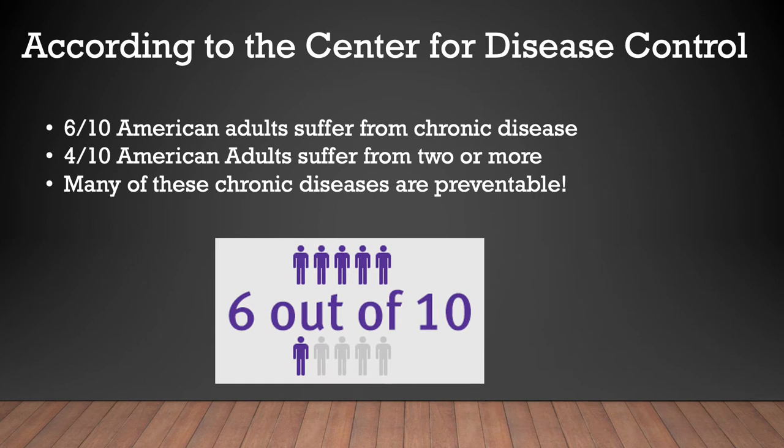According to the Centers for Disease Control, 6 out of 10 American adults suffer from chronic disease, and 4 out of 10 suffer from 2 or more chronic diseases. Many of these diseases are preventable. This data suggests that more than half the population of the United States suffers from a preventable condition. This is ridiculous.